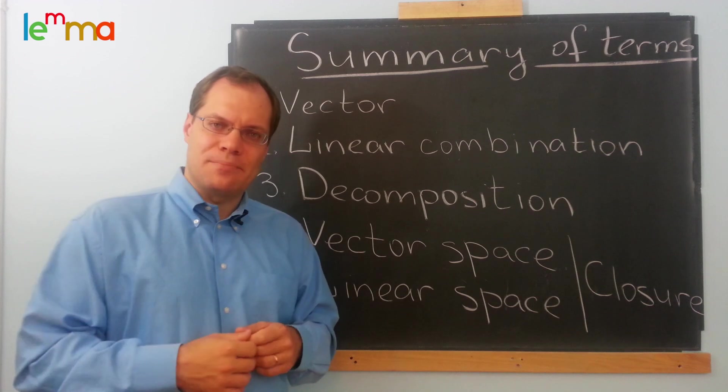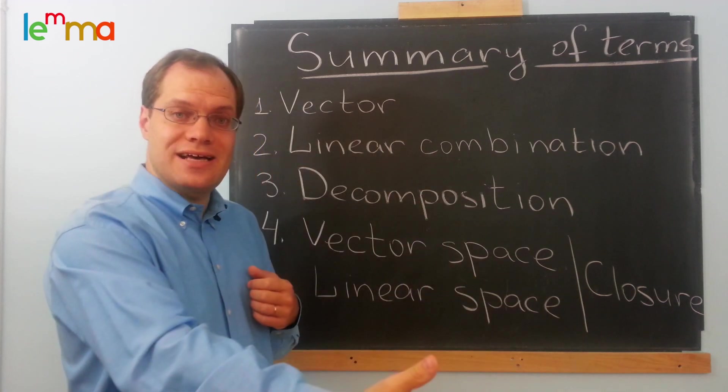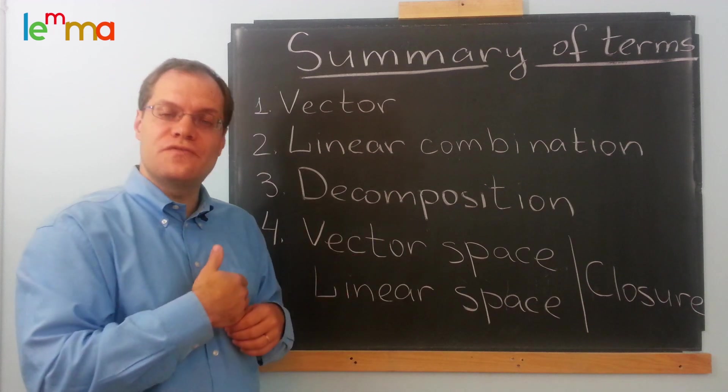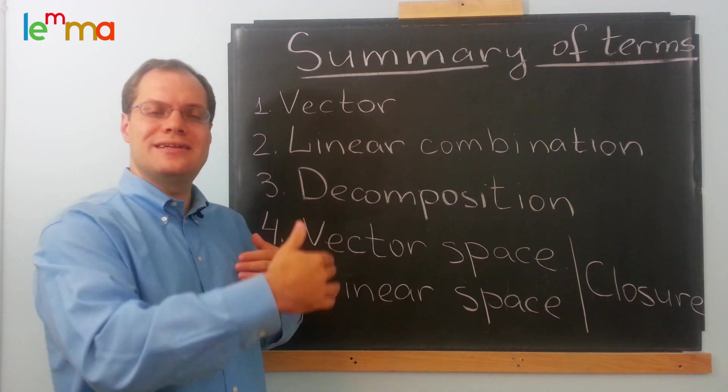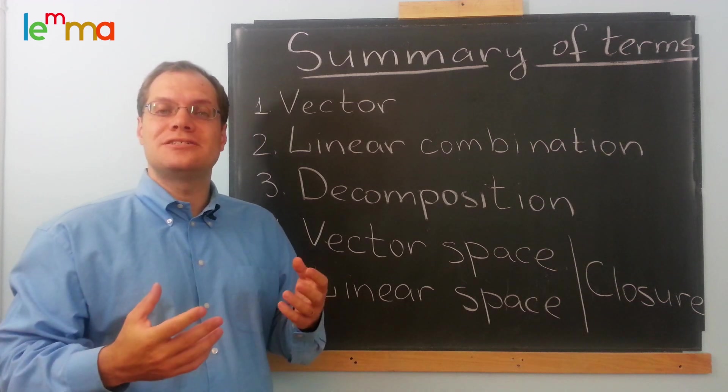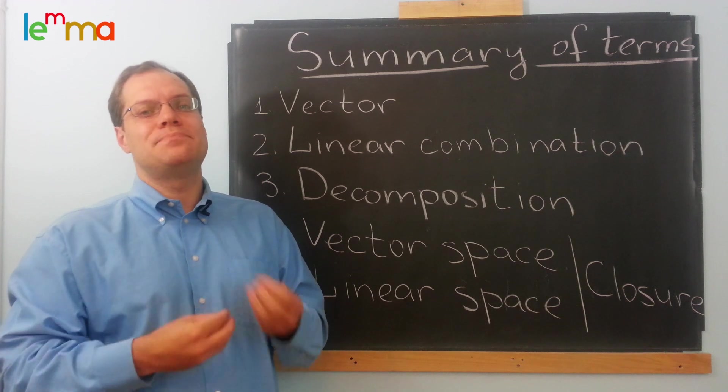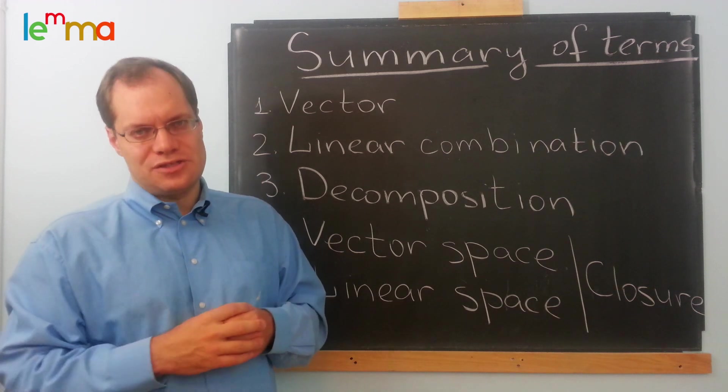Decomposition is the opposite operation. When you're given the vectors and you're given the right-hand side, and you need to determine the coefficients of the linear combination that would produce that right-hand side. So decomposition is very much tied to the notion of linear combination, but in a sense, it's the inverse of that operation.